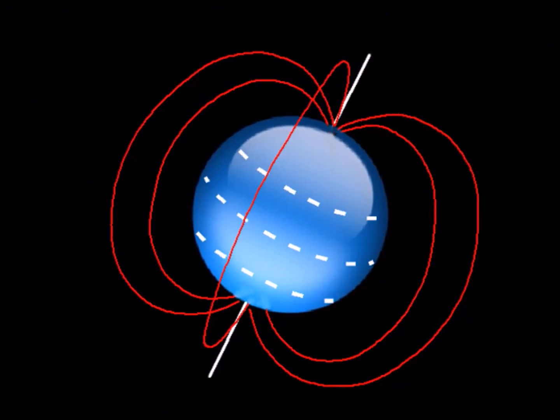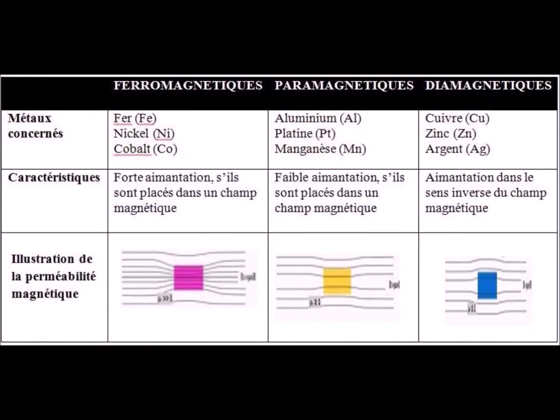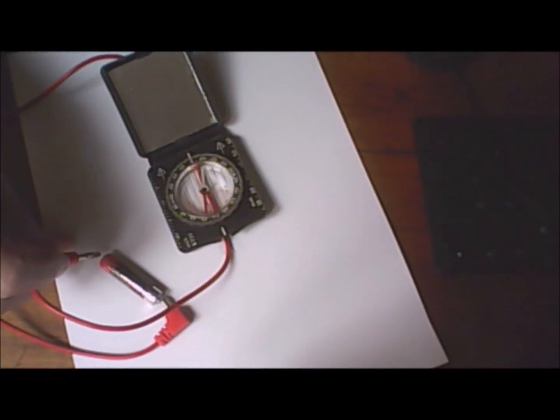Quantum mechanics attributes the magnetic properties of all materials to the intrinsic magnetic field of electrons. Except for conductors. It's still weird.